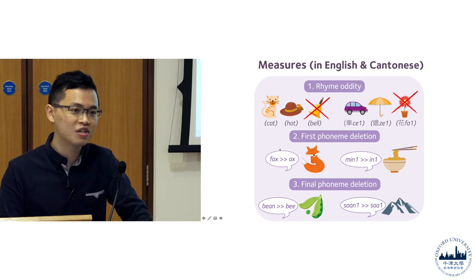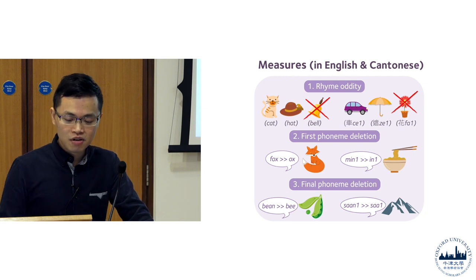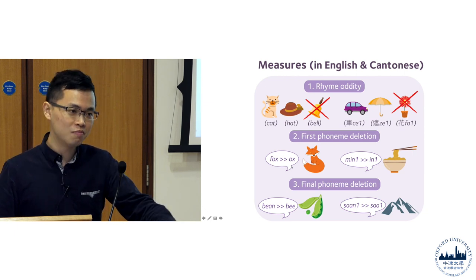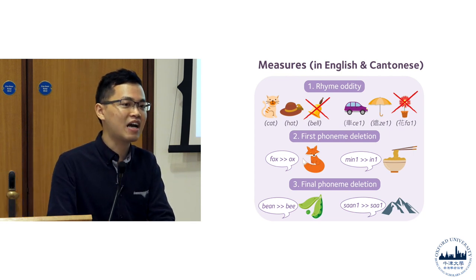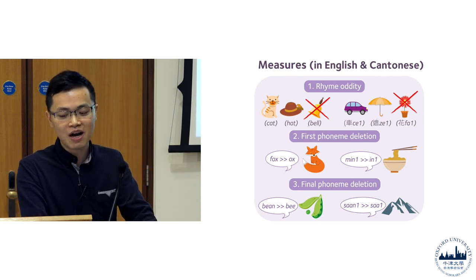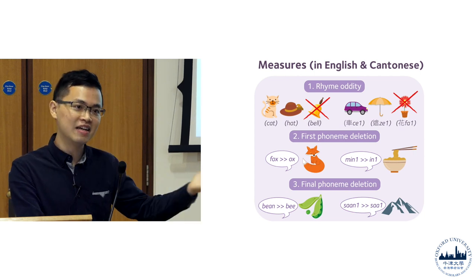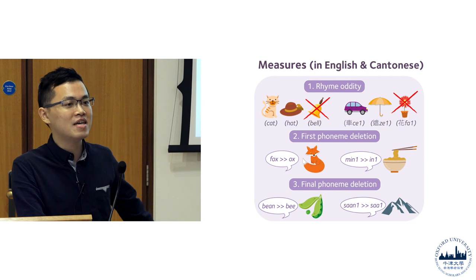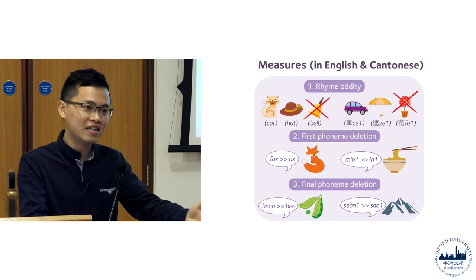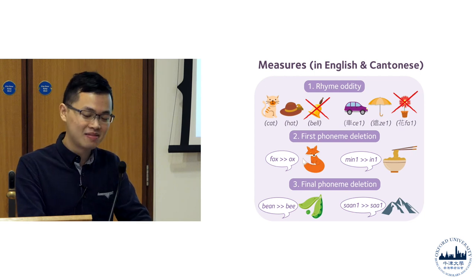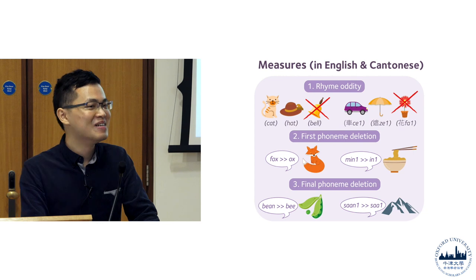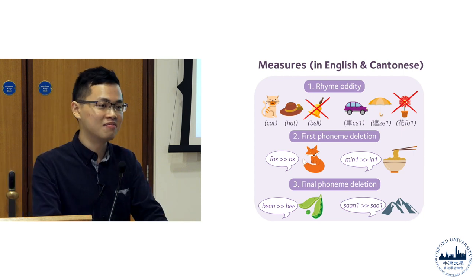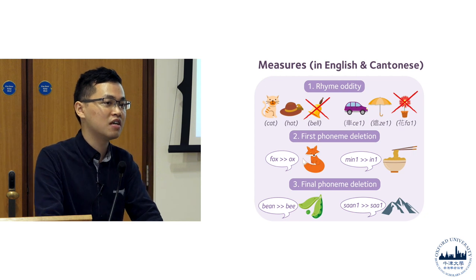Another kind of playing-with-sound ability, we call it the deletion ability. For example, you repeat 'fox' without saying the first 'f' sound, so it becomes 'ox.' And interestingly, for Cantonese syllables you can do that as well — like 'mean' becomes 'in,' with the 'm' sound missing. Similarly, for the final phoneme detection, it's something like 'bin' becomes 'b,' with the 'n' sound missing, and 'san' becomes 'sa.' You can differentiate these tiny differences as a native Cantonese speaker, but it will also work with non-native Cantonese speakers.